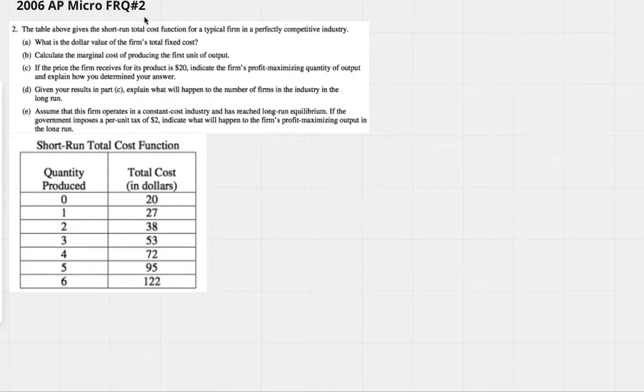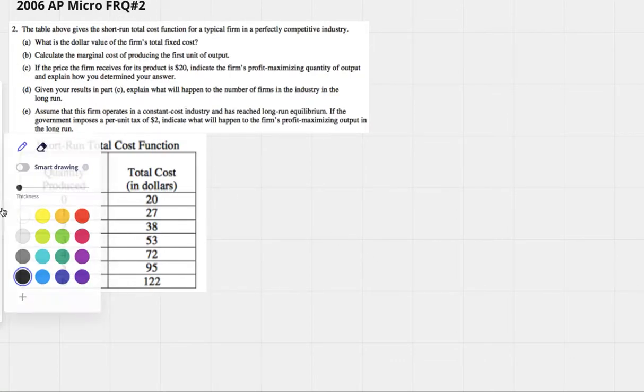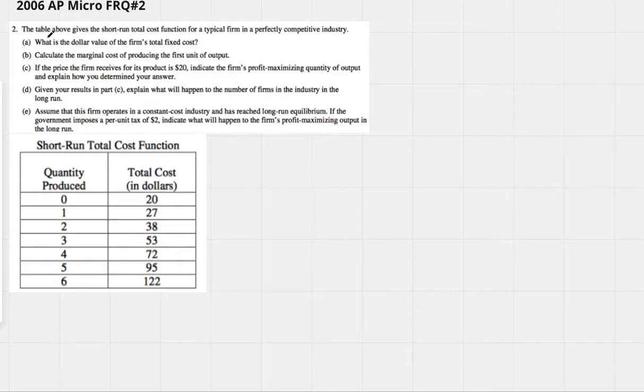Today we're going to do the 2006 AP Micro FRQ, number two, obviously. The table above gives a short-run total cost function for a typical firm in a perfectly competitive industry.